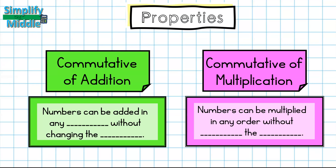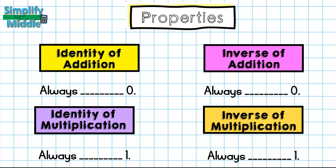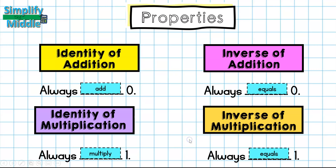Let's recap. Commutative of addition: numbers can be added in any order without changing the sum. Commutative of multiplication: numbers can be multiplied in any order without changing the product. Substitution property: if a equals b, then b can be used in place of a. Multiplicative property of zero: anything times 0 equals 0, and this property has no inverse. Identity of addition: always add 0. Inverse of addition: always equals 0. Identity of multiplication: always multiply by 1. Inverse of multiplication: always equals 1.